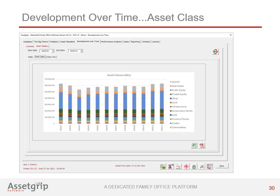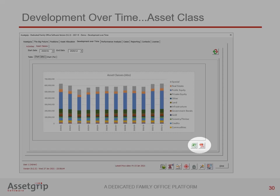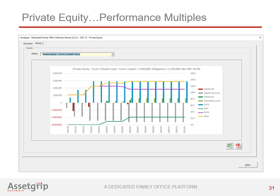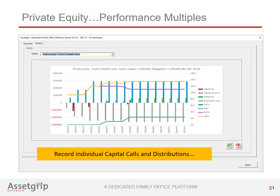One picture says more than a thousand words. That's why AssetGrip attaches great importance to the combination of charts and tables. The tab 'development over time' has both graphical bar charts and tables with numbers, both of which can be exported as a PDF file on the fly. Investing in private equity — both directly and indirectly through funds — has its own dynamics. Although capturing positions takes place on just one screen, private equity has its own specific investment decisions compared to, for example, public equity.